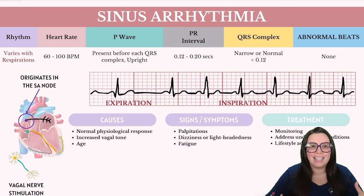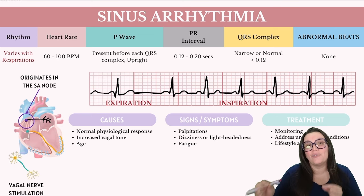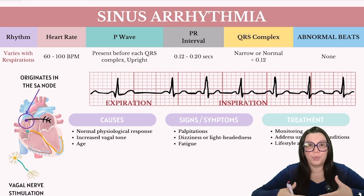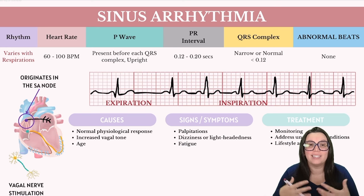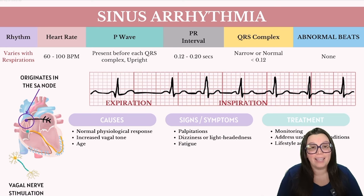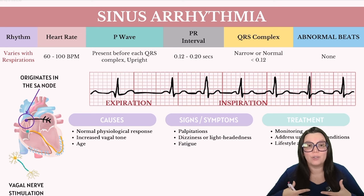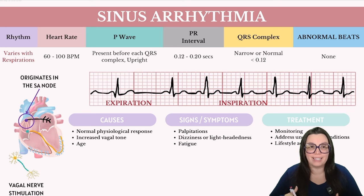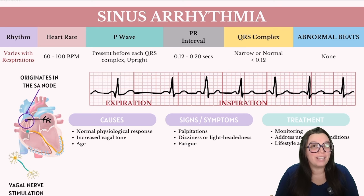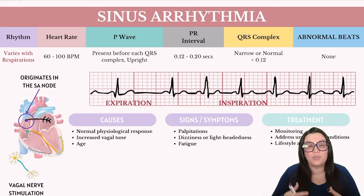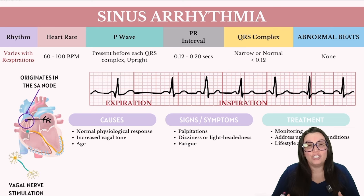Because of this, the heart rate is going to increase, allowing more blood to flow back to the heart from the veins, increasing our venous return. During exhalation, the heart rate is going to slow down. The pressure in the thorax is going to slightly increase, venous return to the heart is going to decrease, and the heart doesn't have to beat as quickly.